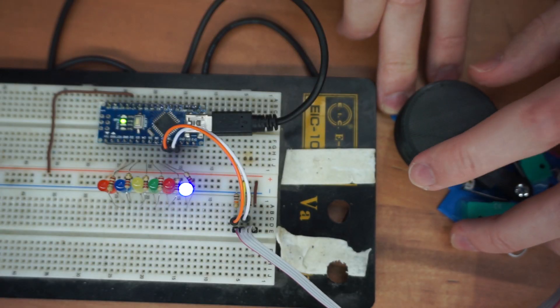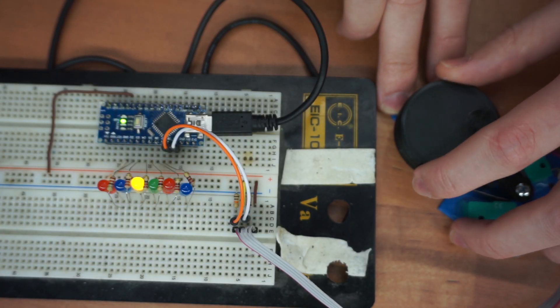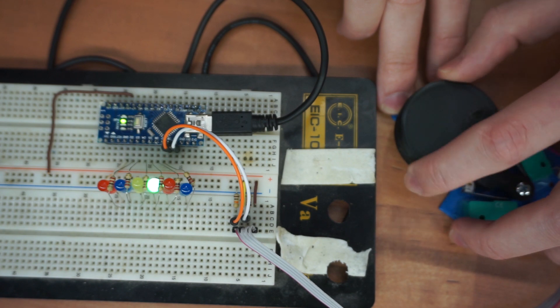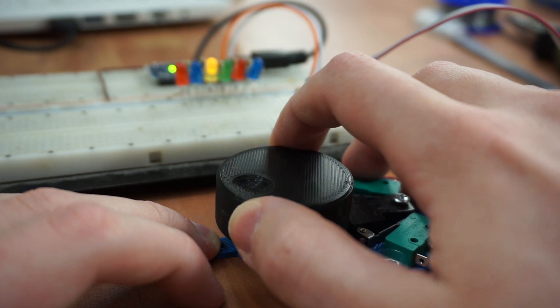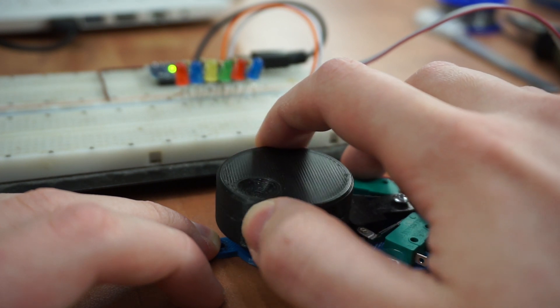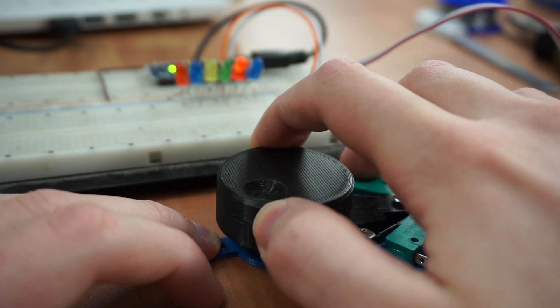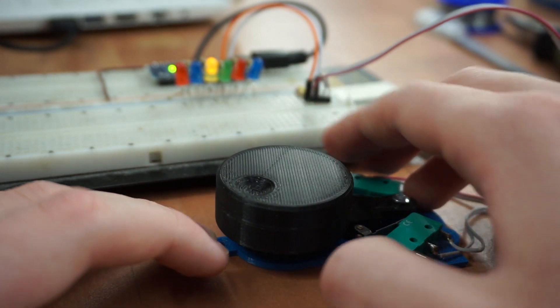So here is a little demo. I spin it one way, the LEDs change. I spin it the other way, the LEDs change. It just works, and one step of the wheel translates to one LED being changed. Not two LEDs, not zero LEDs.